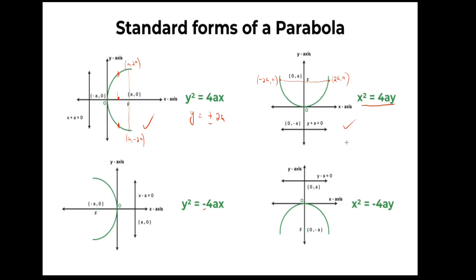When the vertex is at the origin, the equation is x² = 4ay. This can be modified: when the vertex is translated to point (h, k), the equation becomes (x - h)² = 4a(y - k). Similarly, for the other orientation, it becomes (y - k)² = 4a(x - h). This completes the recap of parabola equations and terminology.